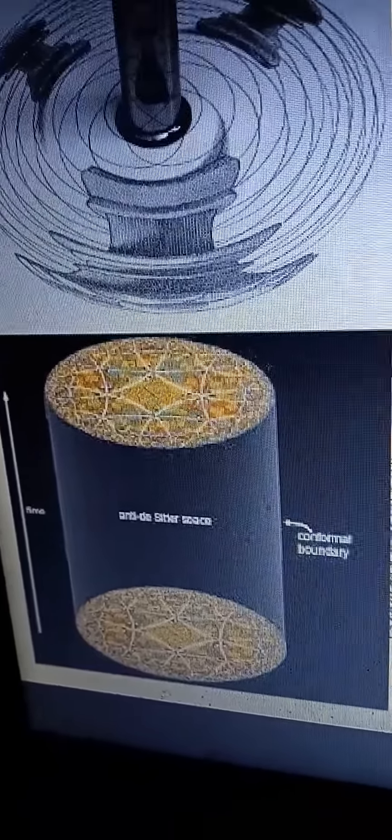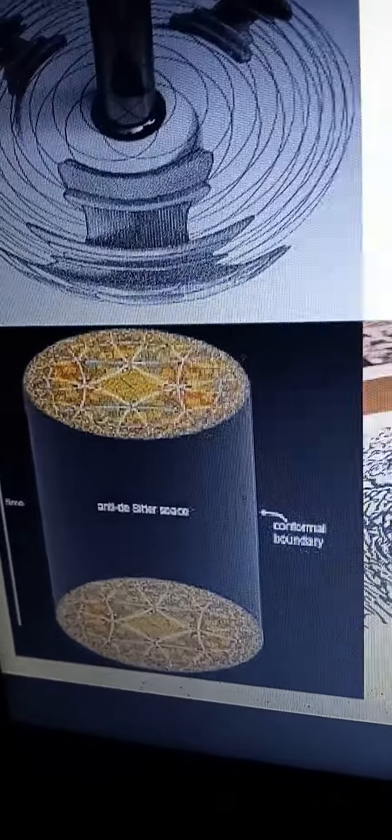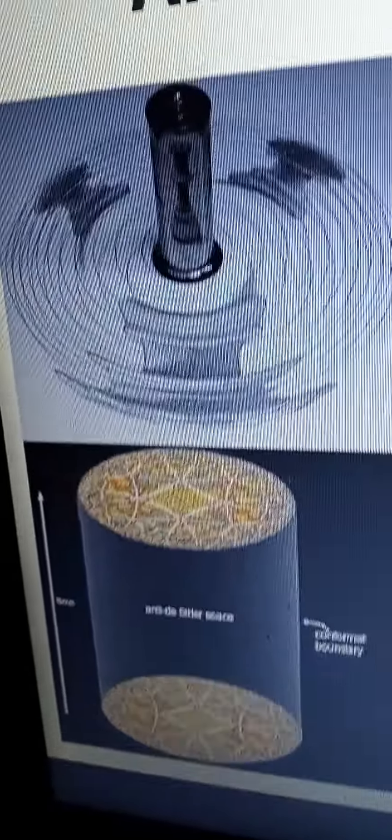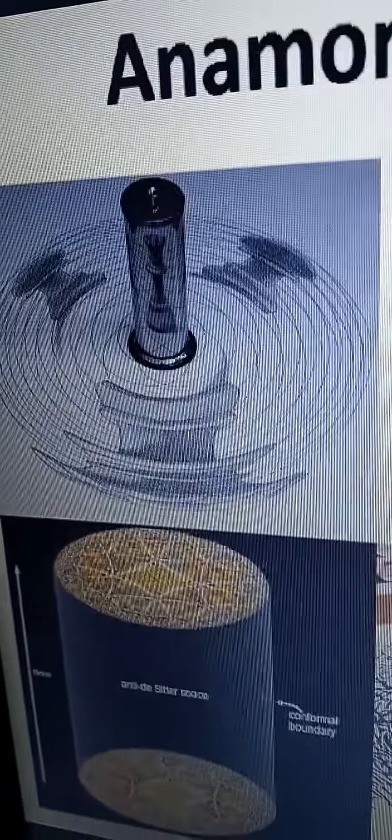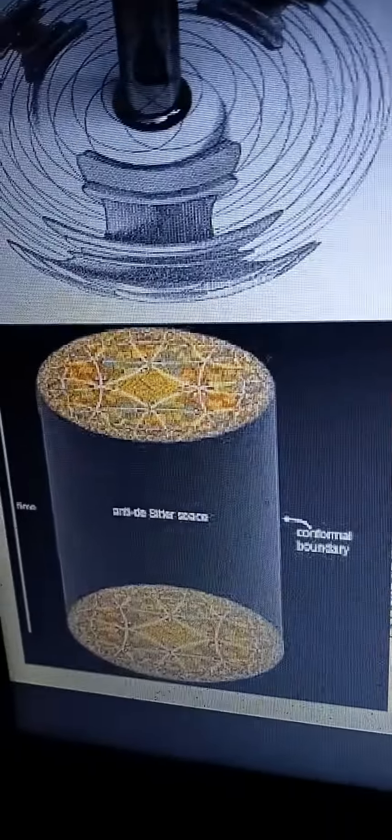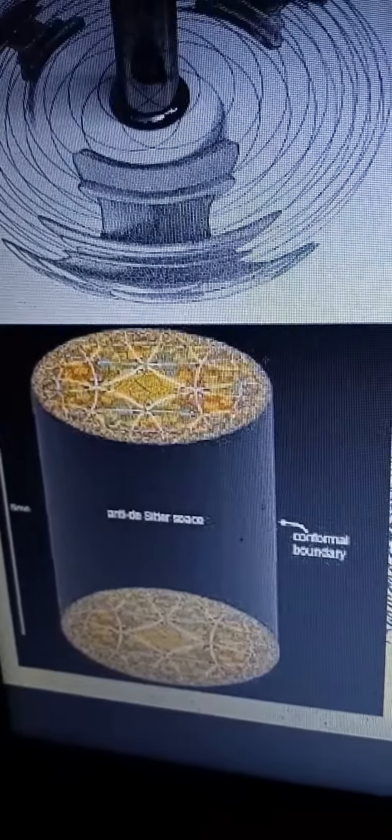The anti-de Sitter space creates the anti-de Sitter space. Both the hyperbolic and the mirror, the hyperbolic flat plane and the conformal boundary go together.